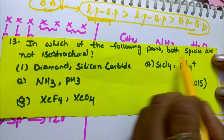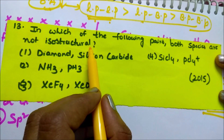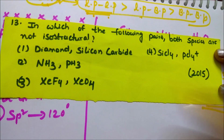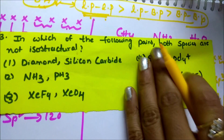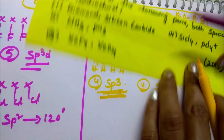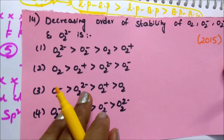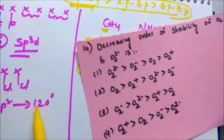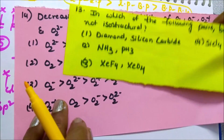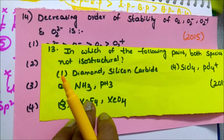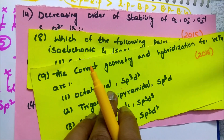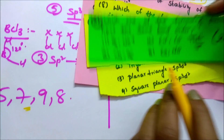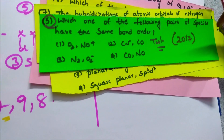In which of the following pairs are both species not isostructural? To find this, you need to determine the structure using hybridization — this is another test-yourself question. There is also a decreasing order of stability question to try. Using the tricks taught, I gave 14 questions in total covering bond order, hybridization, isoelectronic species, and VSEPR theory.